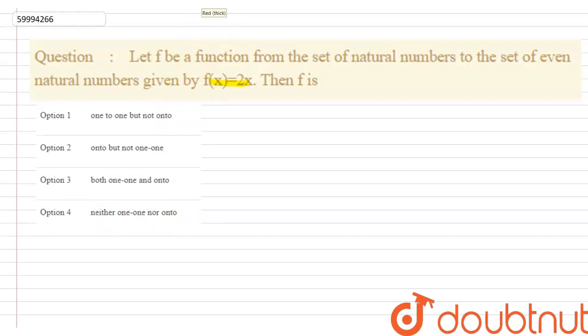Now, we have a function defined from the set of natural numbers to even natural numbers. We need to know that this function is given by f(x) = 2x.